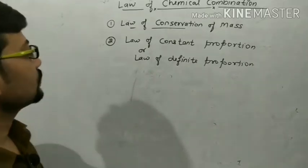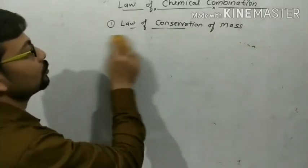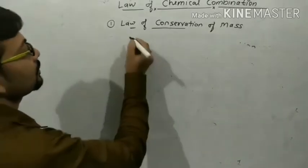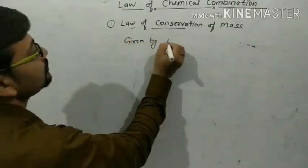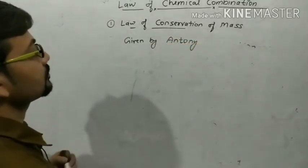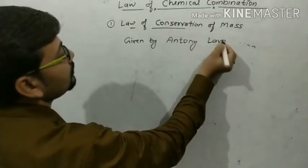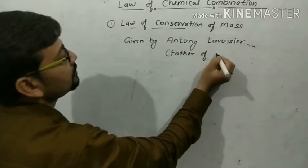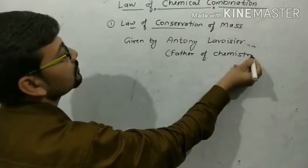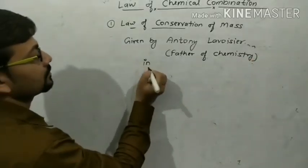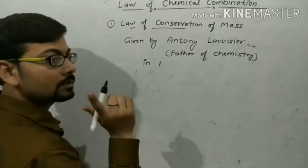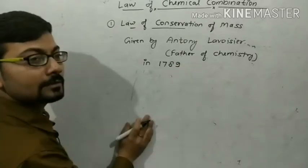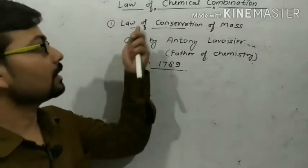Now we discuss what is the Law of Conservation of Mass. This law was given by a scientist whose name is Antoine Lavoisier, who is the father of chemistry. Notice the magic numbers 7, 8, and 9 — in 1789, Lavoisier gave this law.